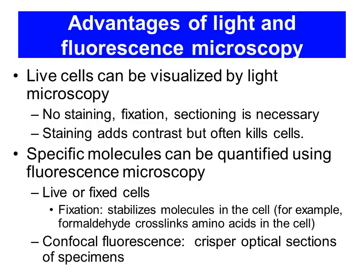You can also use molecules to which you have added a dye covalently — for example, antibody molecules covalently linked to fluorescent dyes. You can use those antibody molecules to target structures within the cell, such as proteins on the membrane. You can then see those cells by looking at the fluorescence emitted through the microscope from the antibody bound to the target.